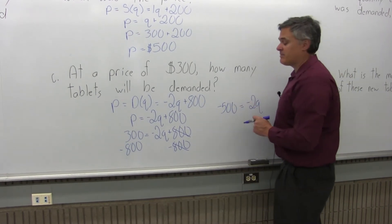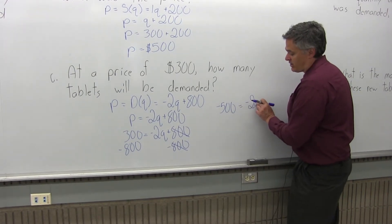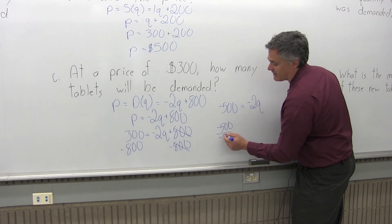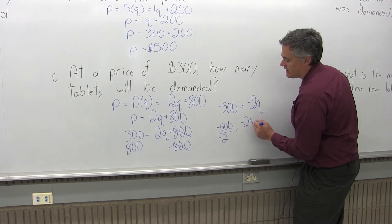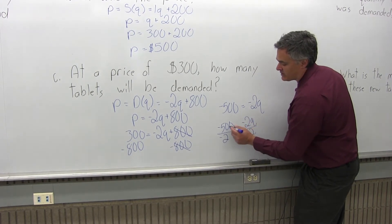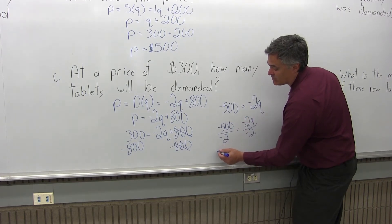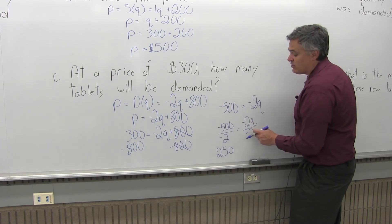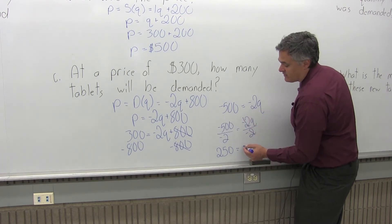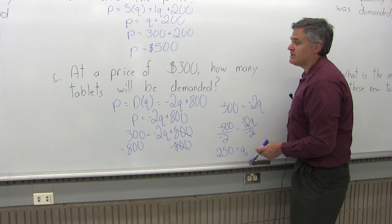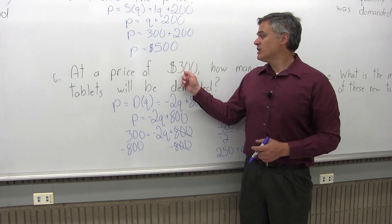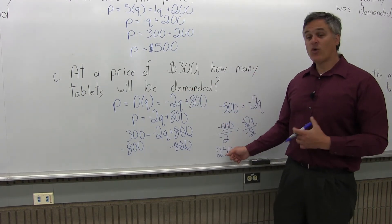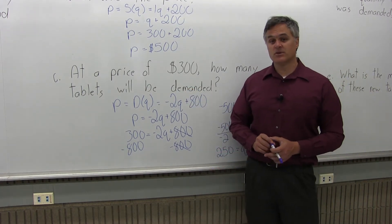The two negatives will wind up canceling. I want Q, not negative 2Q, so I divide both sides by negative 2. Negative 500 divided by negative 2 is positive 250, and on the right the negative 2's cancel, giving 250 equals Q. If the price is $300, consumers will be willing to purchase a quantity of 250 of these computer tablets.